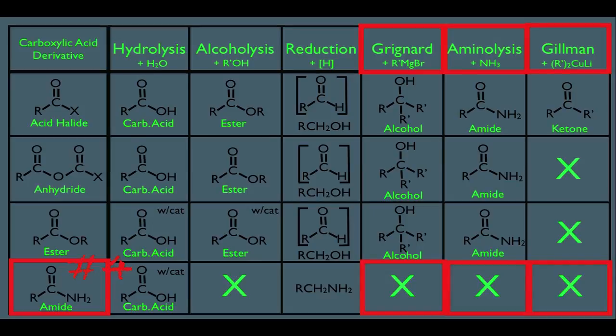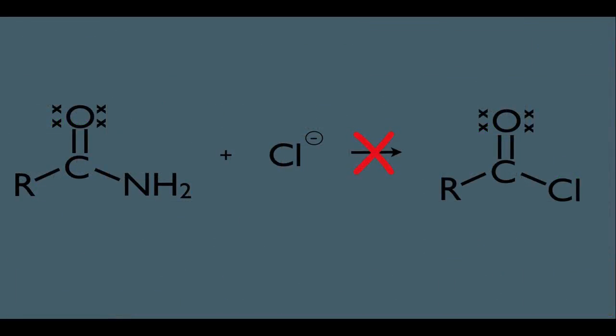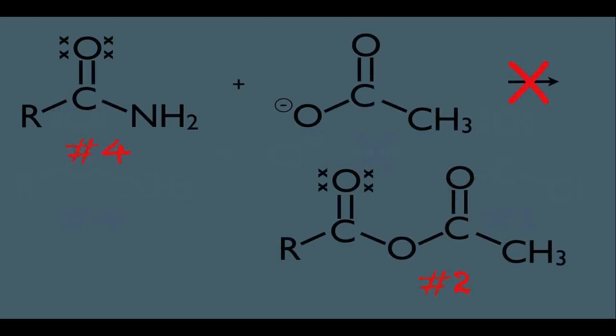Another thing that we should take note of is this right here. If you add Cl to an amide, or any other halogen, this reaction will not happen. And simply because, remember, you can't go directly from a number four derivative to a number one derivative. Even if you try to use an acid catalyst, this reaction still won't happen. And another reaction that won't happen no matter what is this one right here. You can't add an acetylide anion to an amide to get a number two derivative, the acid anhydride. And again, even if we had an acid catalyst, this reaction still will not happen.